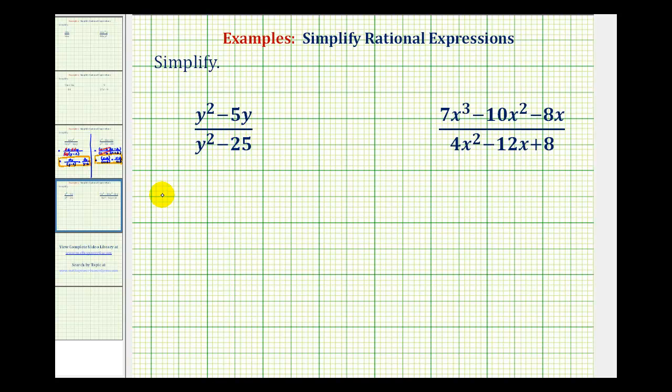Looking at our first rational expression, the first step in factoring is to factor out the greatest common factor. For y squared minus 5y, we have a common factor of y between these two terms, so we'll factor out the y, leaving us with y minus 5.